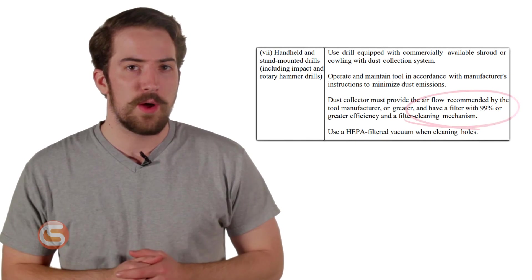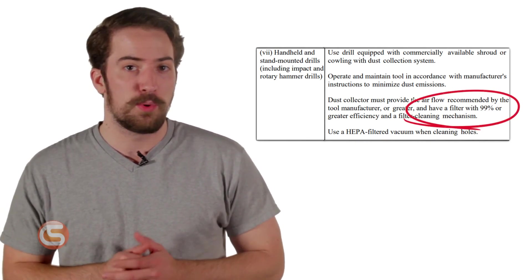It's important to understand that not all vacuums have HEPA filters, which filter out 99.7% of mono-dispersed particles 0.3 micrometers in diameter. A vacuum without a HEPA filter will not be a compliant method of dust extraction.